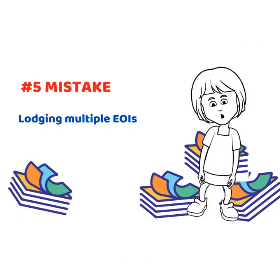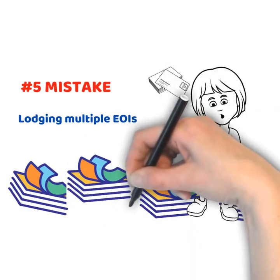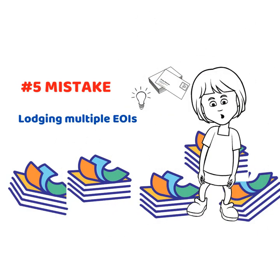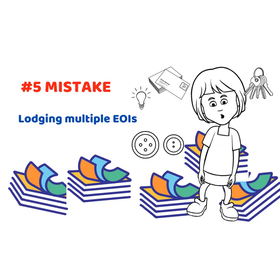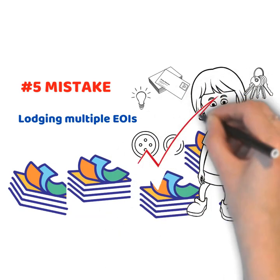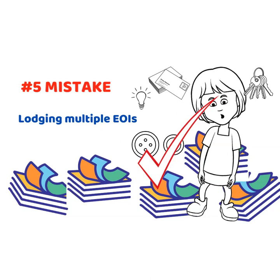The fifth mistake: lodging multiple EOIs. Some people lodge multiple EOIs and that's okay — maybe because they have multiple positive skills assessments and want to try their luck at either occupation, or the EOI has been sitting in the system for a while without an invitation, or they want to try other visa subclasses or other states. However, while multiple EOIs may broaden your chance of getting invited, it may also decrease your chance of invitation, especially if you're looking for state nomination, as answering 'any state' may be weak compared to those who only nominate one state. Each state assesses the genuineness and sincerity of each applicant to live, work, and stay in the nominating state.